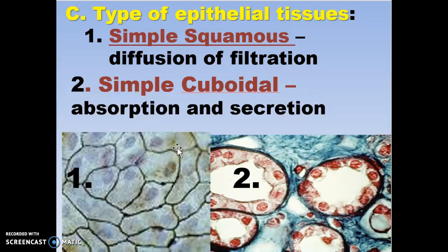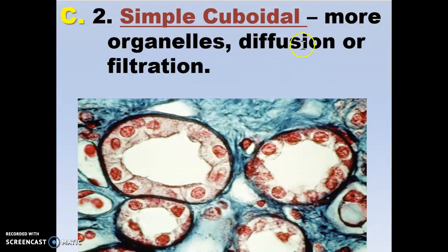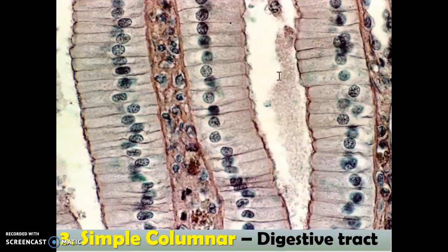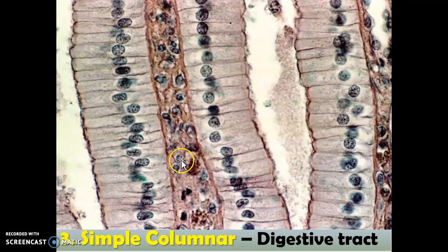Review: simple squamous is for diffusion or filtration. Simple cuboidal is for absorption and secretion — they have more organelles, more diffusion and filtration, they're bigger. Simple columnar you find in the digestive tract. This is a super close-up of a microvilli — microvilli are made up of simple columnar cells lining on top of some connective tissue with blood vessels throughout and lymph tissue.